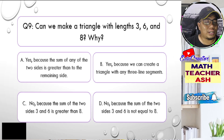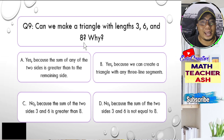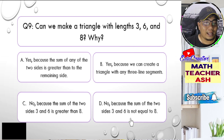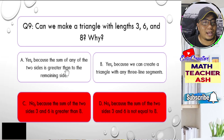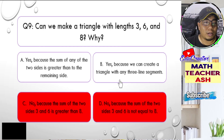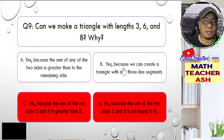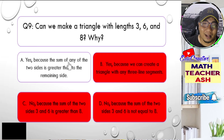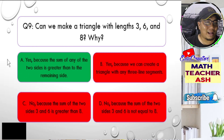In this question, 3 + 6 = 9, and 9 is greater than 8, so this is applicable. Choices C and D are already wrong. Letter B is also not applicable because we cannot just make any three line segments without considering their measurements. The correct answer is letter A — yes, because the sum of any two sides is greater than the remaining side.